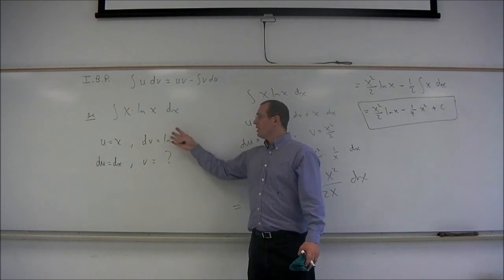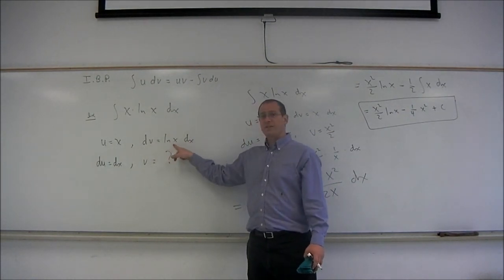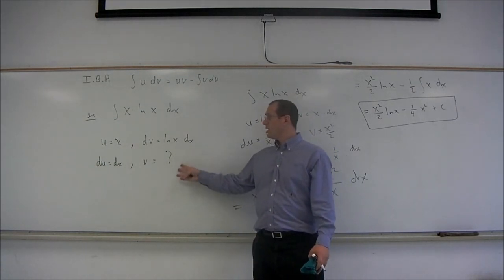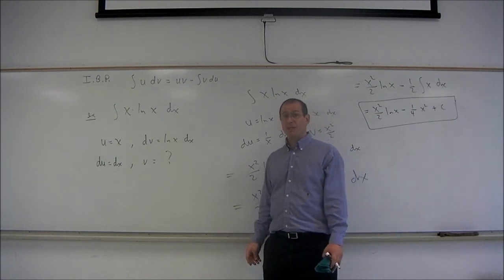The first attempt where we chose u to be x and dv to be log x required that we anti-differentiate the logarithm, and that left us at a place, that left us stuck, basically.